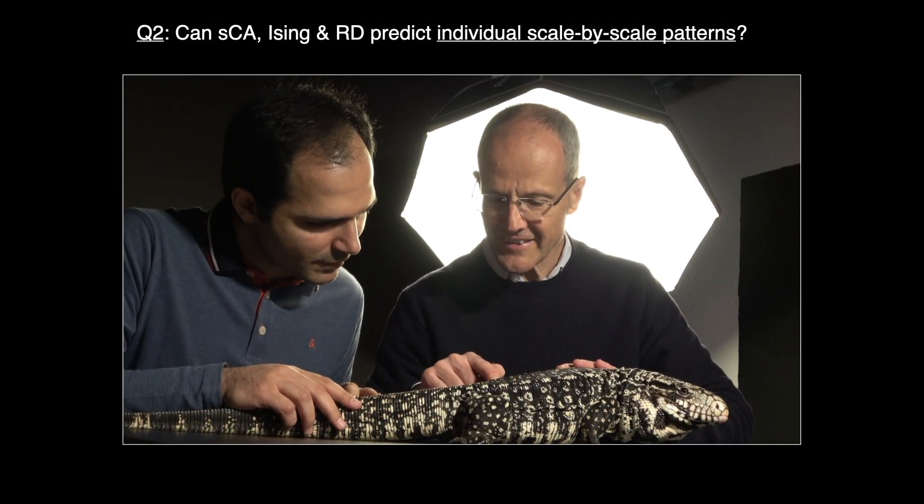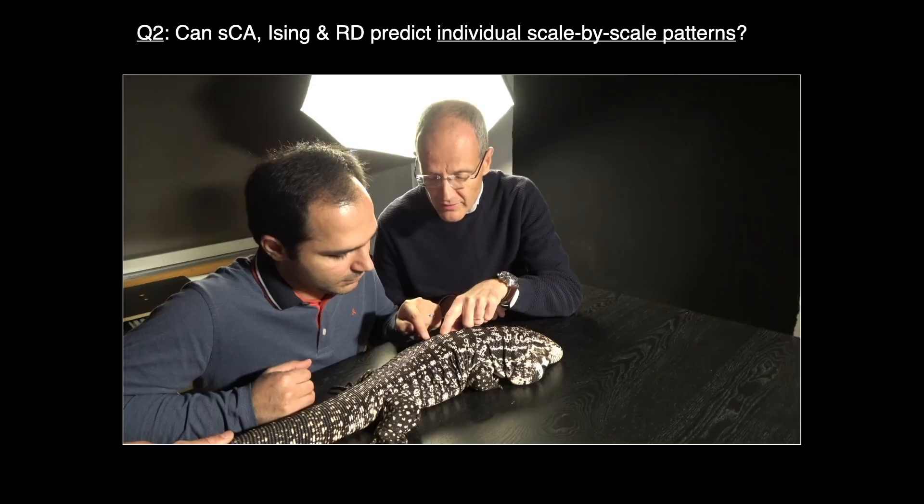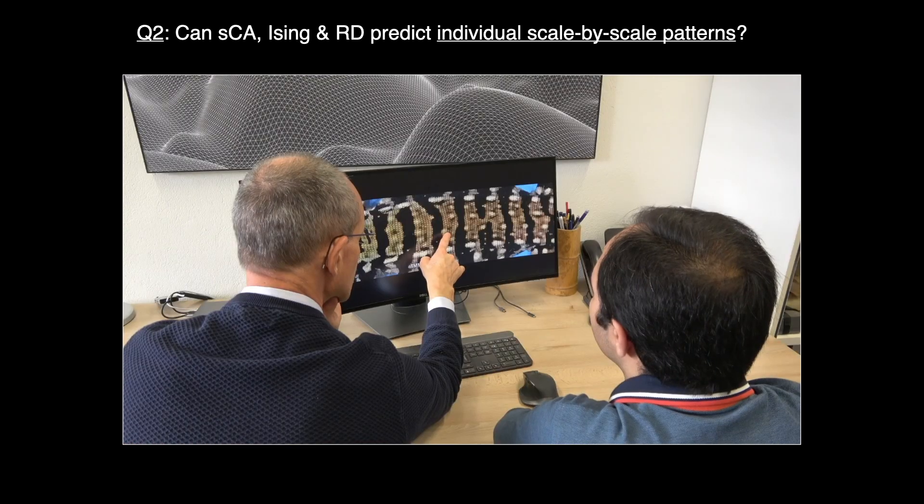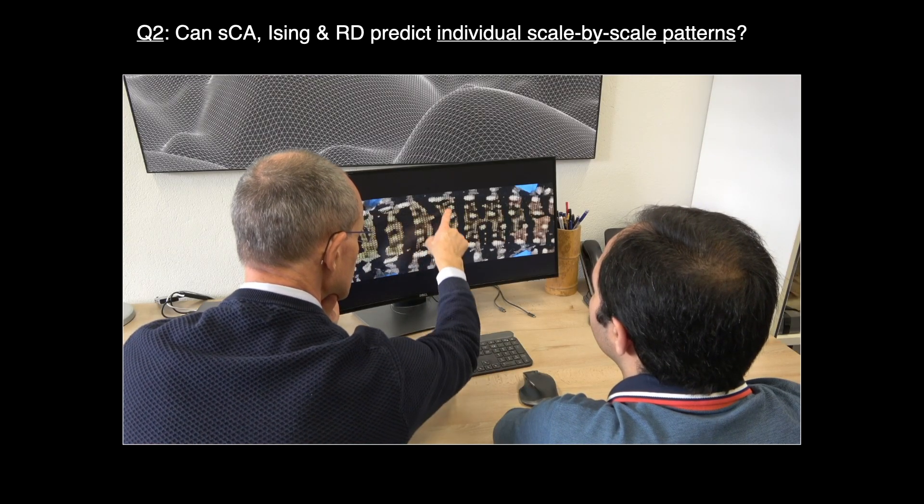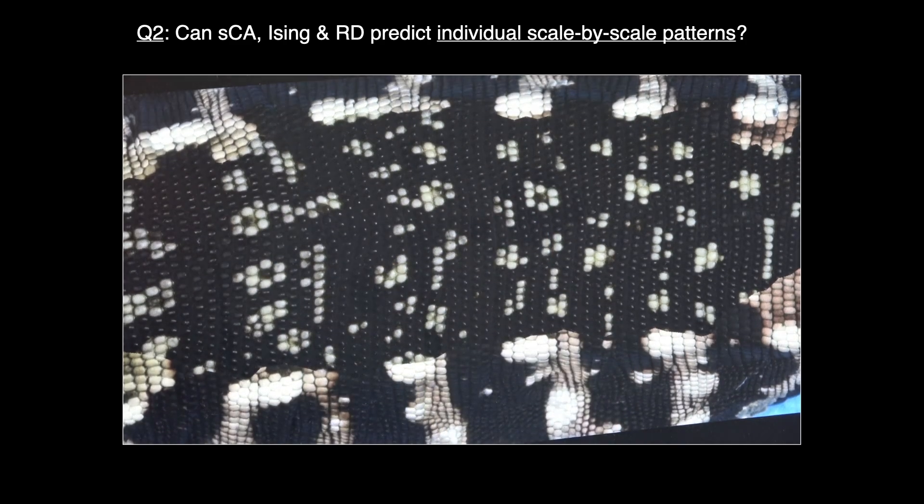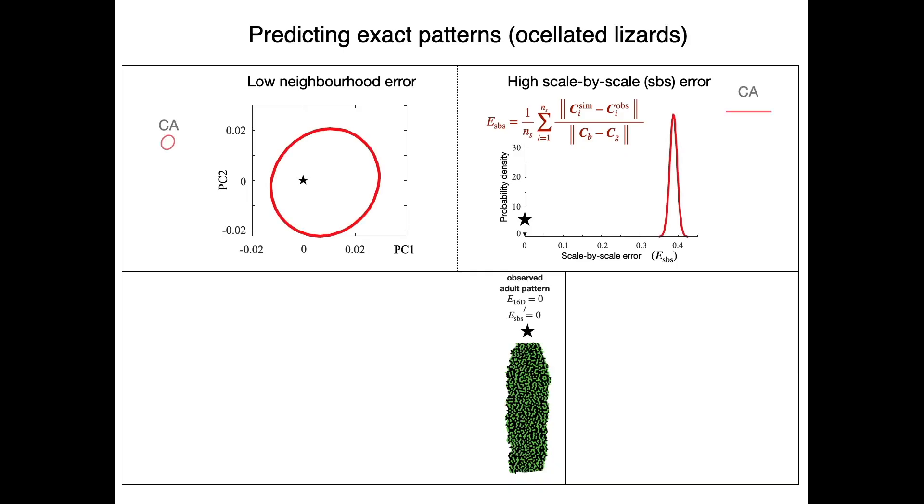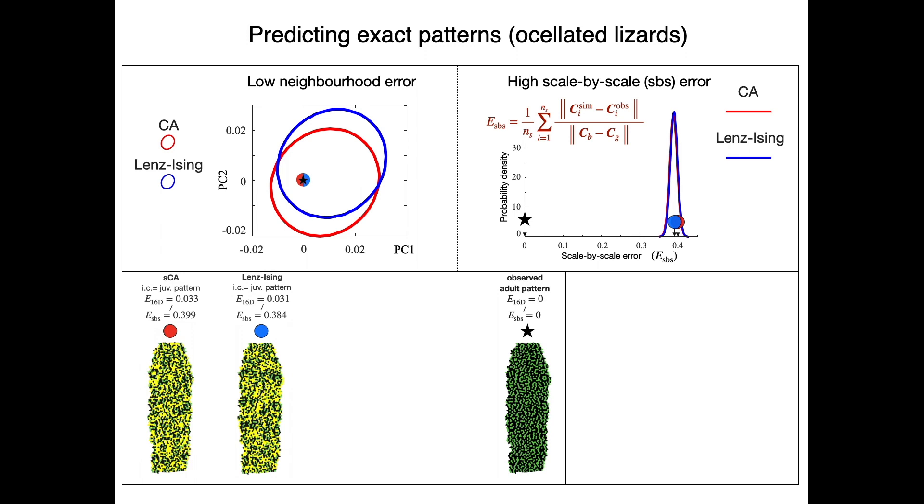We then investigate if these various models predict not only neighborhood distributions, but also individual scale-by-scale adult patterns. Our analyses indicate that the stochastic models generate large scale-by-scale errors, despite the fact that they excel in predicting neighborhood statistics. This result is confirmed by the absence of correlation between nearest neighbor error and scale-by-scale error.